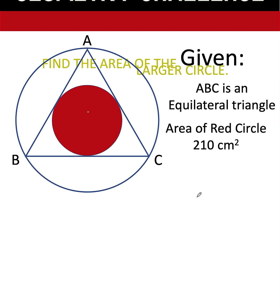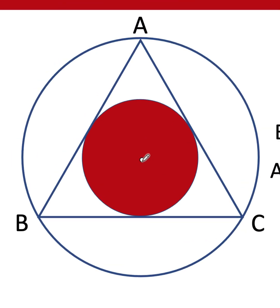Now let's solve this problem together. Let's begin by locating the center of the two circles that are concentric. Since the triangle is an equilateral triangle, that means all the angles of the triangle are 60 degrees. Let's label the center as center O.